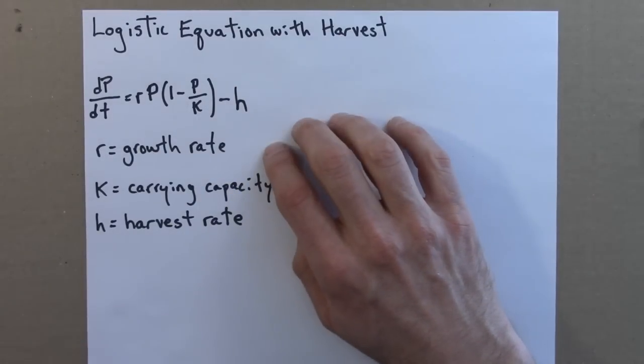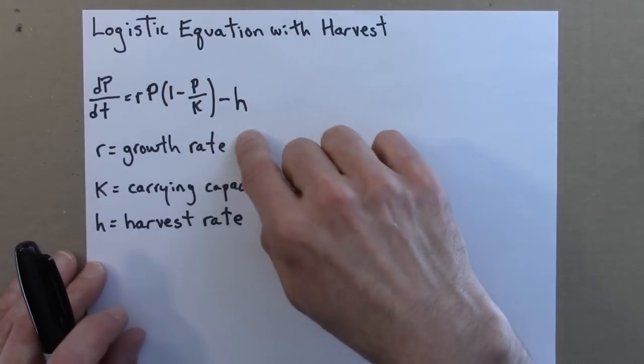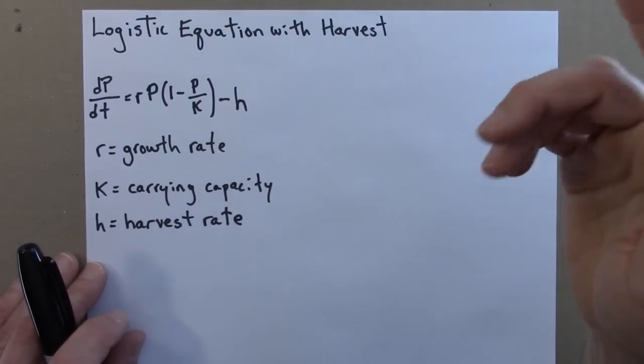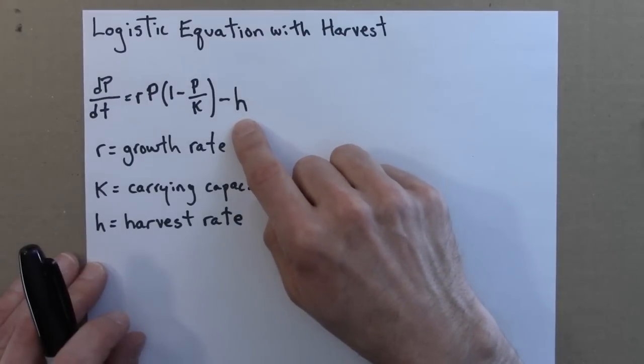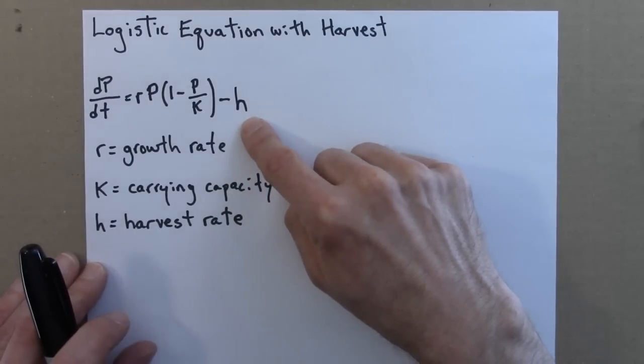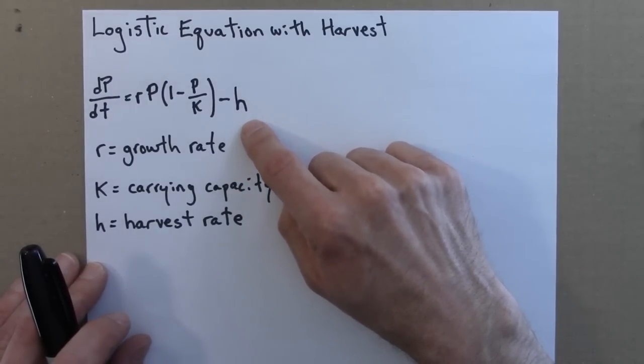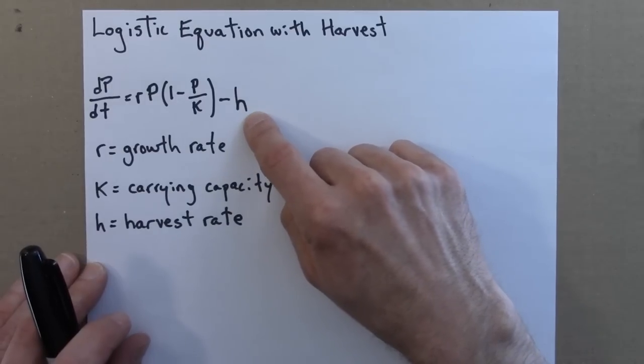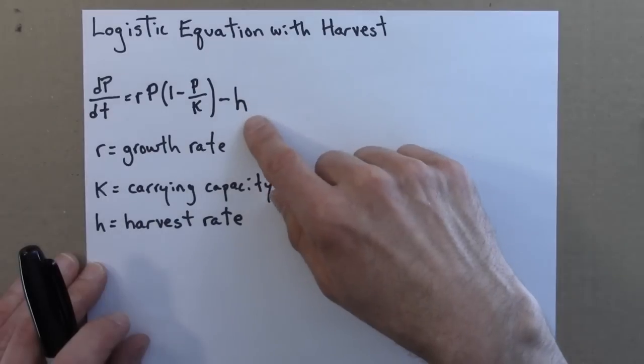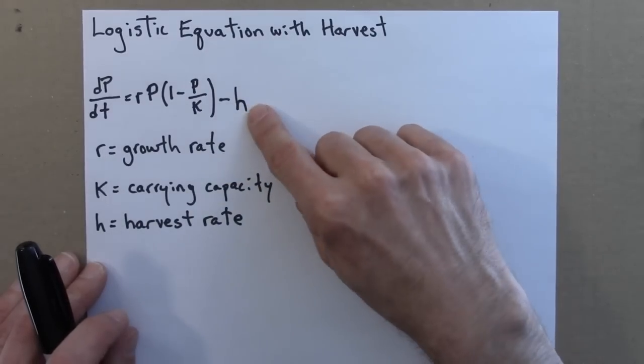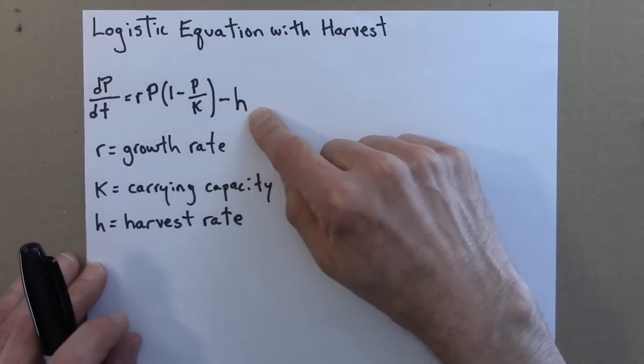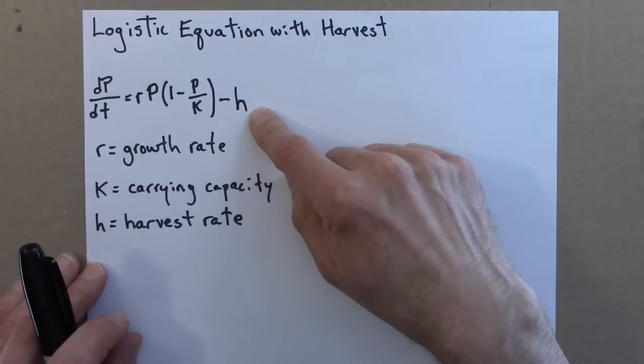So for concreteness, I'll think that we're modeling some fisheries, fisheries in a lake or a bay or something, and h is the rate at which we catch fish. And h here would just be a number, like a number of fish. So a manager might set h at 50. We can catch 50 fish a year, or 100 fish, or 3 fish.